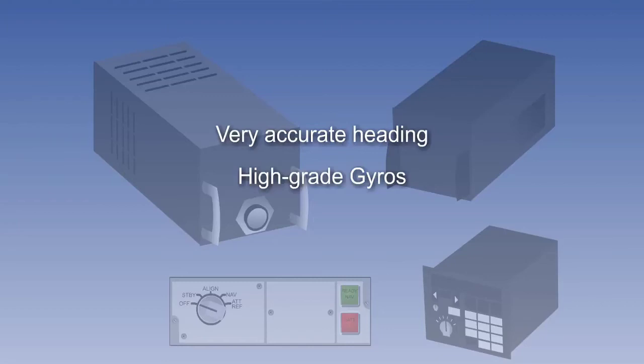Additionally, INS heading is not dependent on earth magnetism. INS calculates an initial true heading by detecting the earth spin, then relies entirely on high-grade gyros to maintain that accuracy. This will be explained later. INS can therefore be used for high latitude and polar navigation where the earth's magnetic field may be weak, or the value of variation may be unreliable.